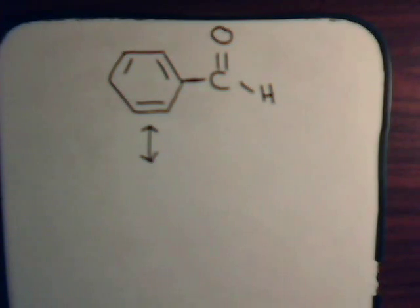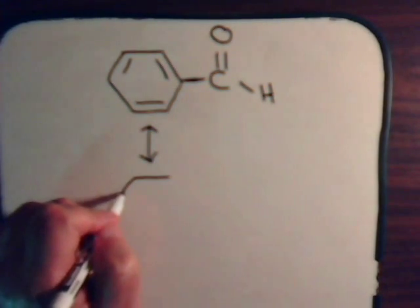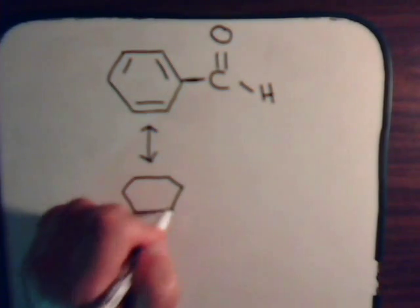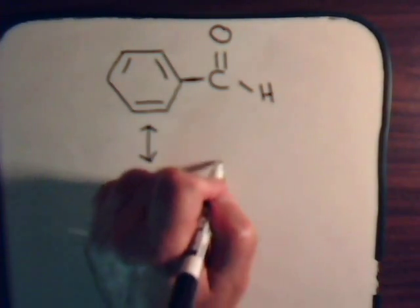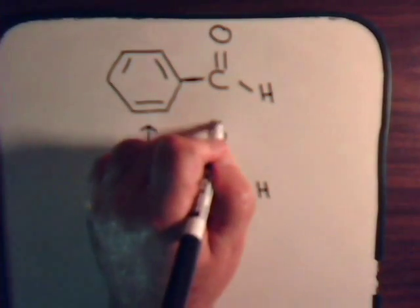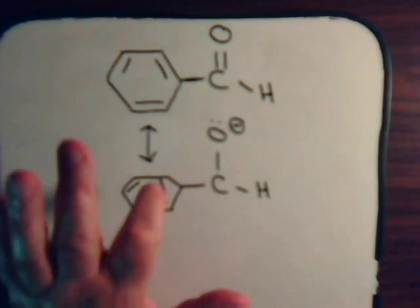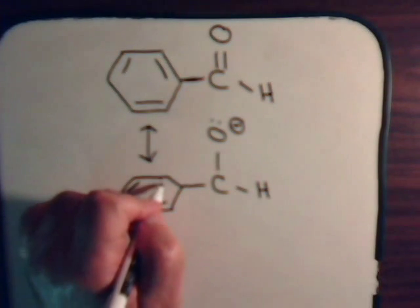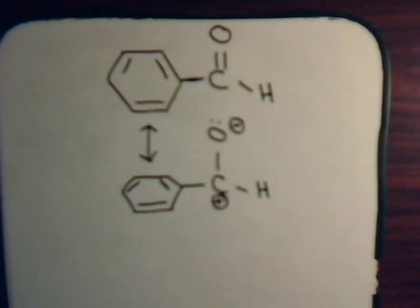What happens if oxygen keeps both electrons for itself, leaving carbon with an empty p orbital? If that happened, carbon would no longer have a pi bond — it would be a single bond. The oxygen would have a lone pair of pi electrons: it had its own to begin with, plus it took one from carbon. Now the carbon has an empty p orbital and consequently a positive charge.